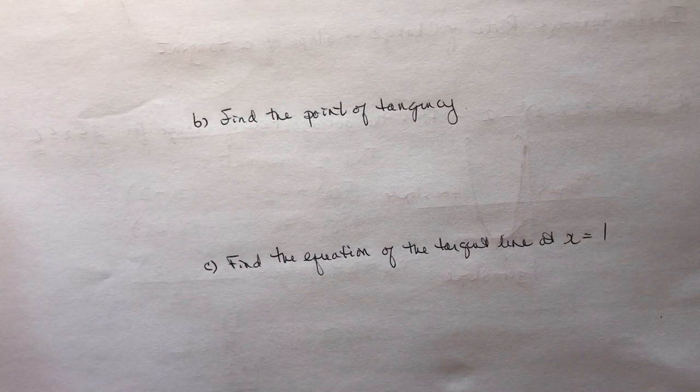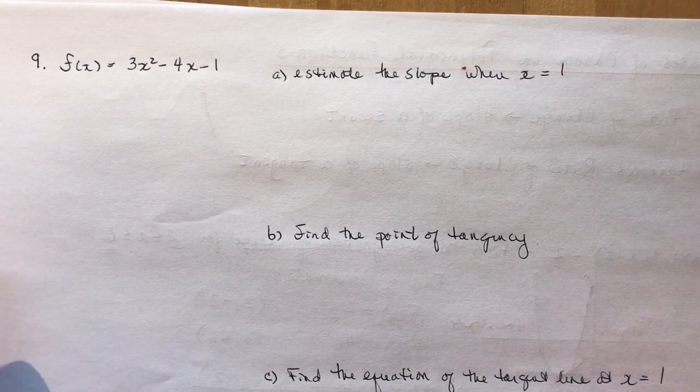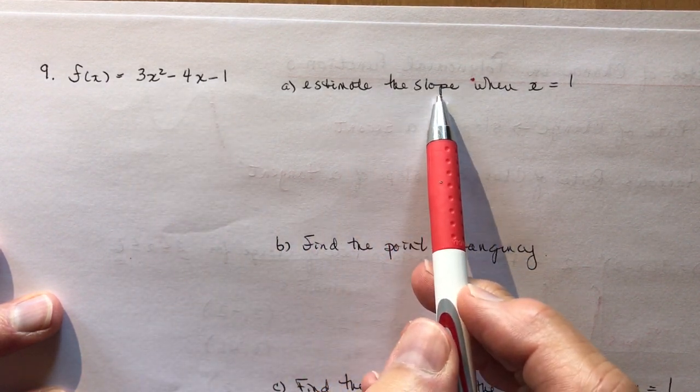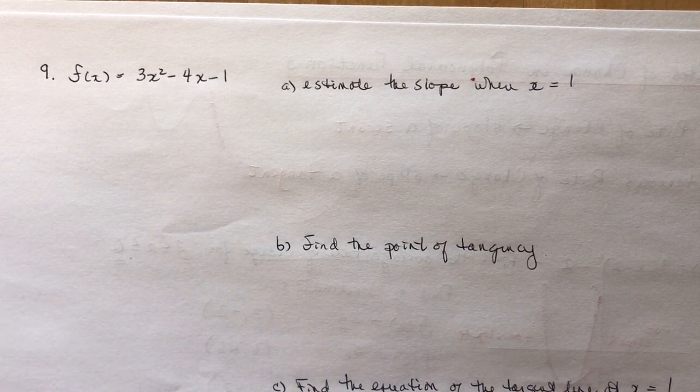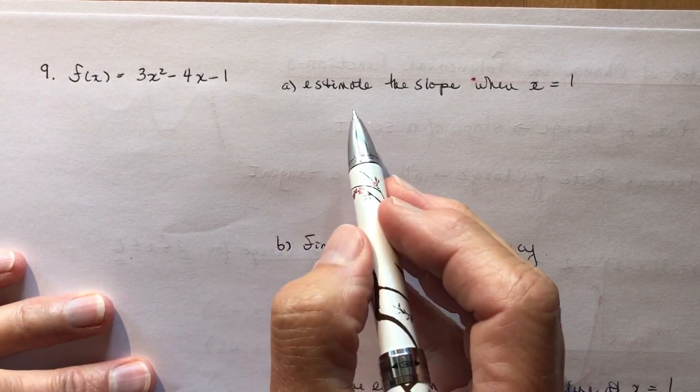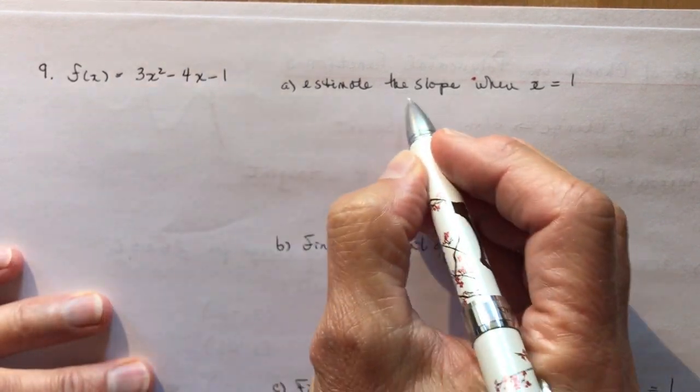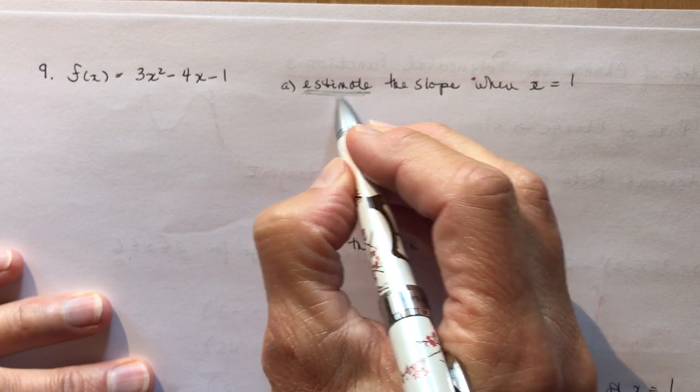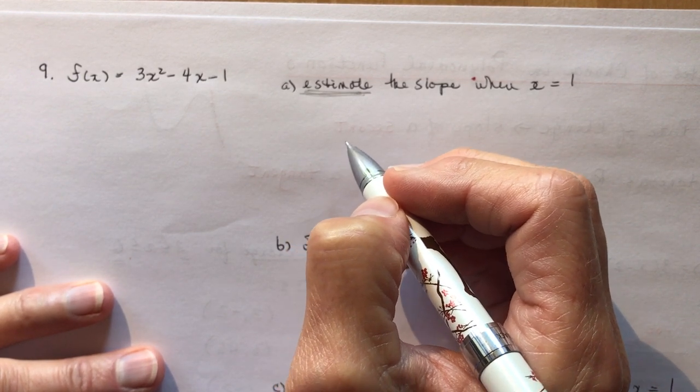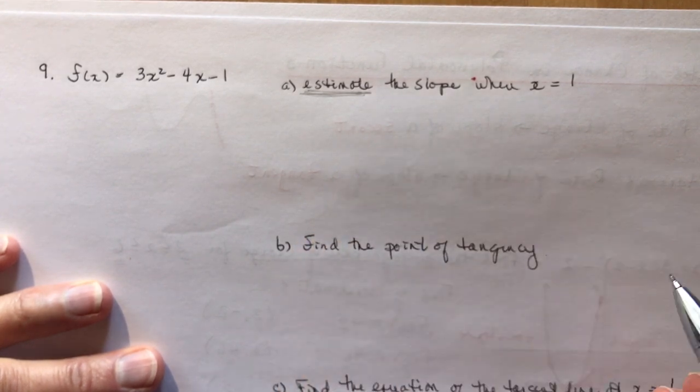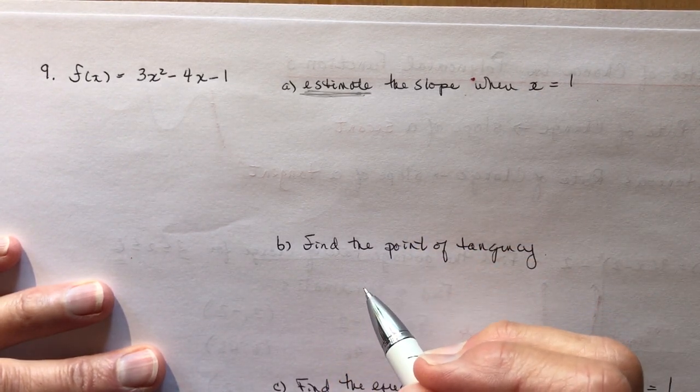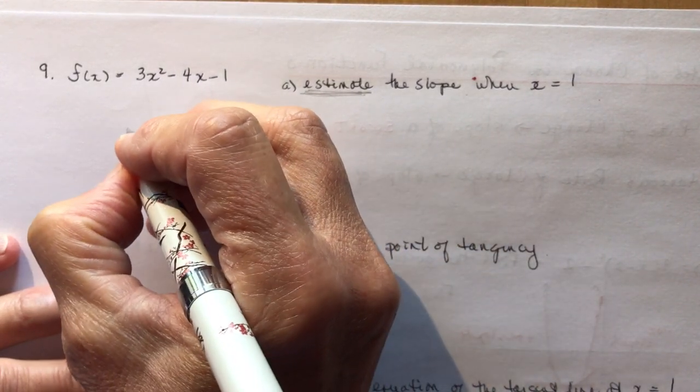We're going to flip over and we're going to do an example from number nine. So it says f of x equals 3x squared minus 4x minus 1. Estimate the slope when x equals 1. Now this time again we have an equation. So remember when you had an equation to find the slope. So if I'm going to estimate the slope, they always say estimate because until you're using calculus you don't know the exact slope.